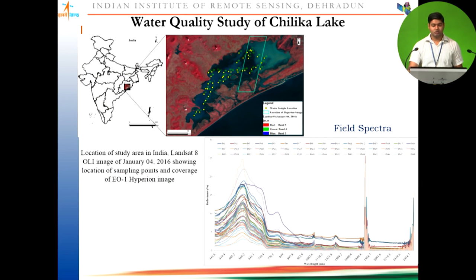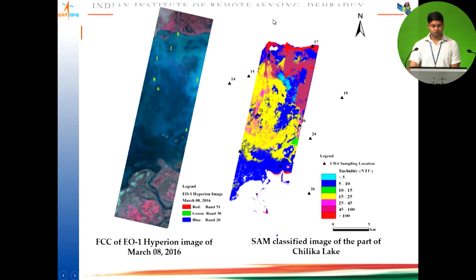Hyperspectral data was used for water quality analysis at Chilika Lake. Ground truth data and field spectra were collected at the location. Using EO-1 Hyperion false color composite data of 8 March 2016, the data was classified with different turbidity levels. Most blue features showed turbidity of 5 to 10, and areas with higher turbidity were also identified.